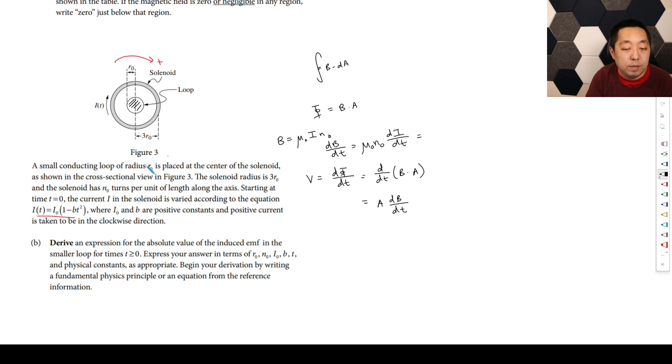So then what's the derivative of that? Well, the number of turns, these are constant, mu naught and N naught. So then it's just dI/dt. dI/dt is going to be the derivative of this thing. So that's mu naught N naught, derivative of that. Well, derivative of one is zero, derivative of this is negative 2BT. So it's going to be I0 times negative 2BT. And so that plugs into the area.